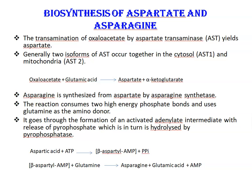Next is the biosynthesis of aspartate and asparagine, two non-essential amino acids. The transamination of oxaloacetate by the enzyme aspartate transaminase yields aspartate. Transamination is the transfer of an amino group from an amino acid to a keto group, creating a new amino acid and a keto group. Here, when oxaloacetate reacts with glutamic acid, the product is aspartate and alpha-ketoglutarate.